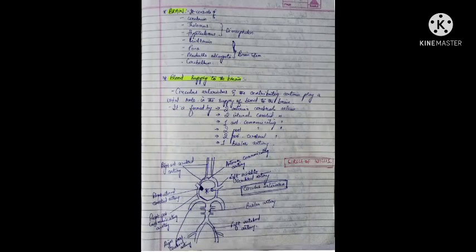The brain consists of the cerebrum, thalamus, hypothalamus, midbrain, pons, medulla oblongata, and cerebellum. The main parts are the cerebrum, cerebellum, and brainstem. The thalamus and hypothalamus are also known as the diencephalon. The brainstem is composed of the midbrain, pons, and medulla oblongata.